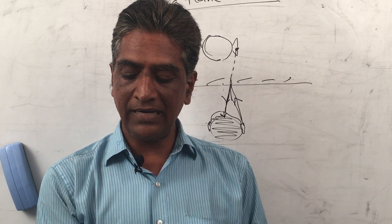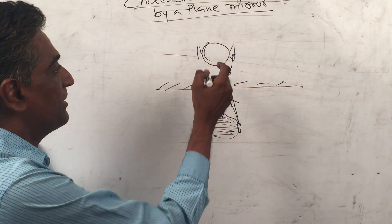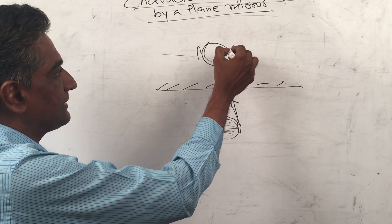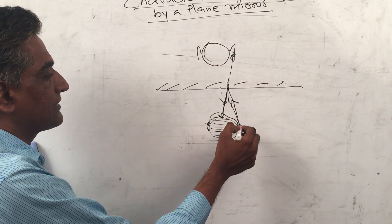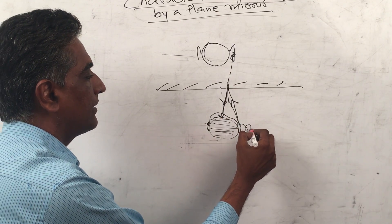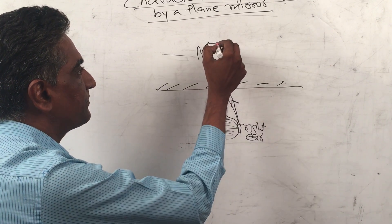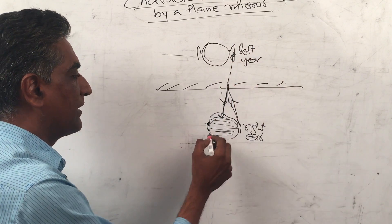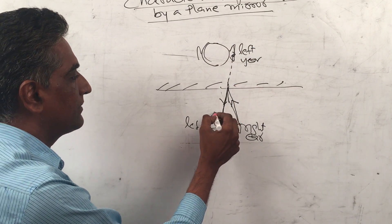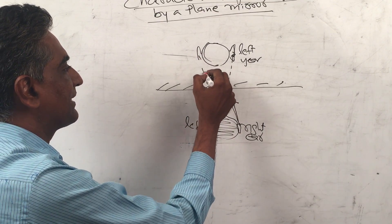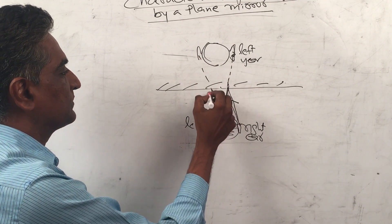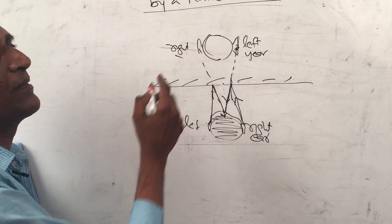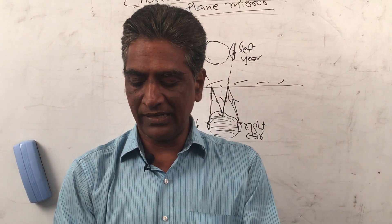That is why our right ear looks like the left ear in the image. The real boy's right ear is on his right, but for the boy in the image, this becomes the left ear. In the same way, if this is the left ear, the reflected ray comes from the other side - left will become right and right will become left. So clear!